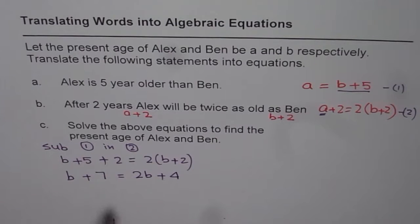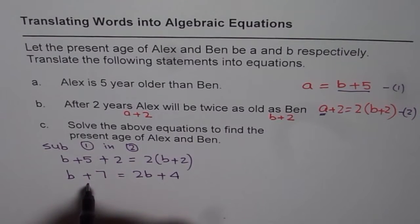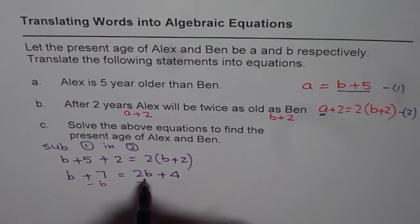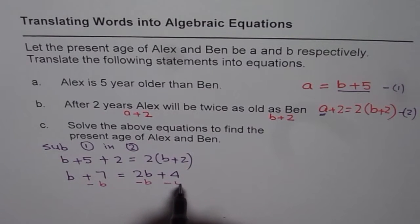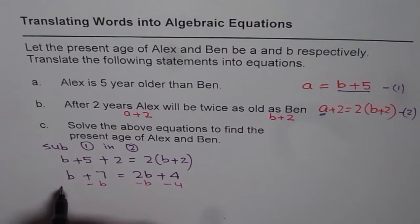So we can now rearrange. We can take away B from this side and 4 from both the sides. So what we will do is, to solve it further, we can actually take away B from both the sides. And we can take away 4 also. So if we do that, what do we get?